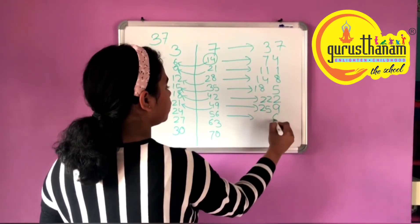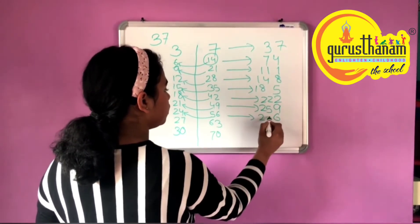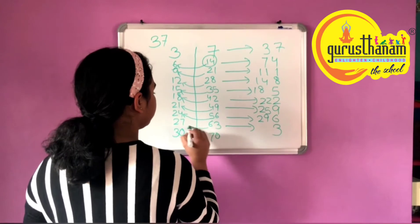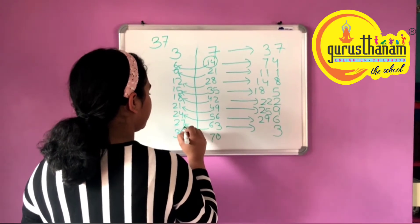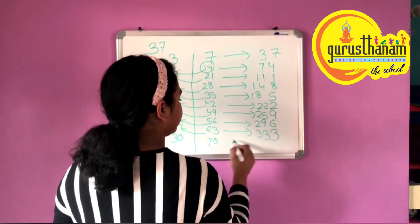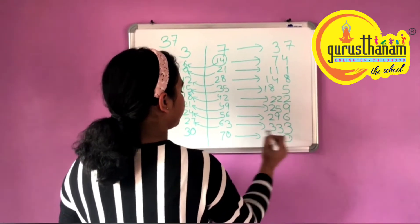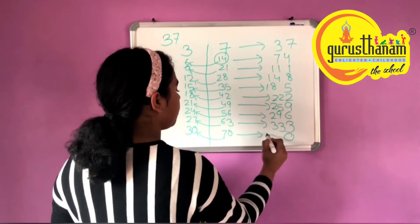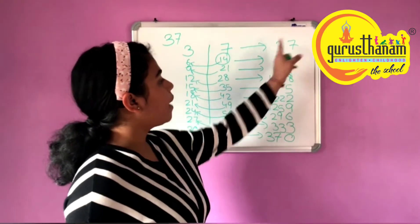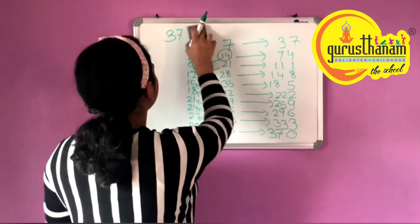How much number? 2 — 96. How much number? 3 — 30, 3, 3, 3. How many numbers? 3 — 70. I have the 37 table as well. It takes a very long time.